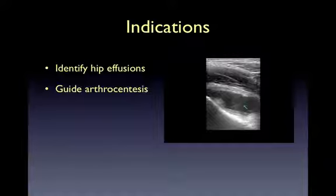What are the indications for hip sonography? There are really only two: identify a hip effusion in the setting of possible septic arthritis, and provide real-time guidance for hip arthrocentesis. Septic arthritis is a true orthopedic emergency that requires urgent arthrotomy and IV antibiotics. We'll spend most of our time focusing on ultrasound in the evaluation of septic arthritis; other possible indications such as hip fracture will be briefly discussed at the end.